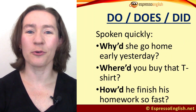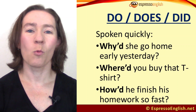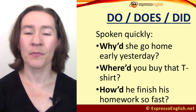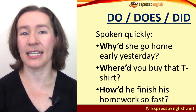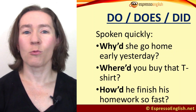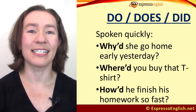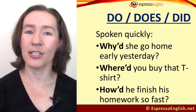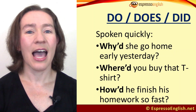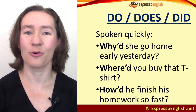One little advanced tip for you: when we're asking questions in the past with why, where, and how plus did, we often shorten the word did in spoken English. So we would say 'why'd she go home early yesterday' instead of 'why did she.' 'Where'd you buy that t-shirt' for 'where did.' 'How'd he finish his homework so fast' for 'how did.'